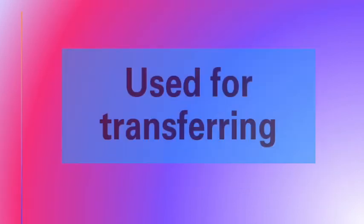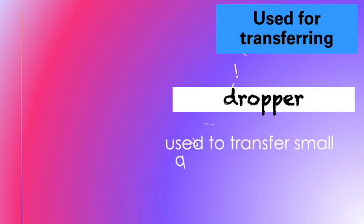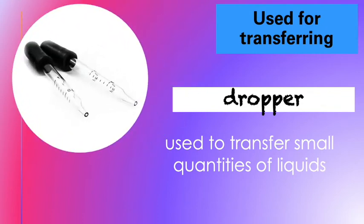The next category is used for transferring. The first one is a dropper. It is used to transfer small quantities of liquids. Here's a picture of a dropper.